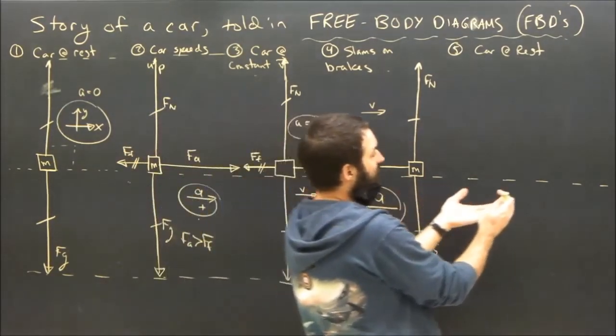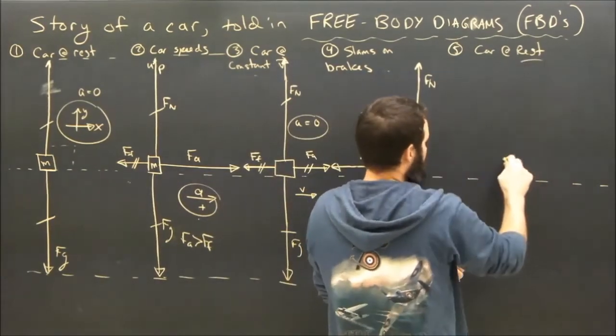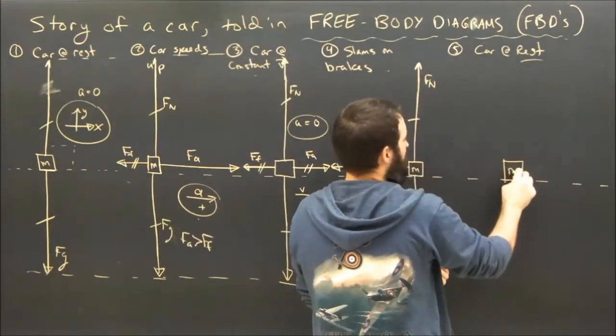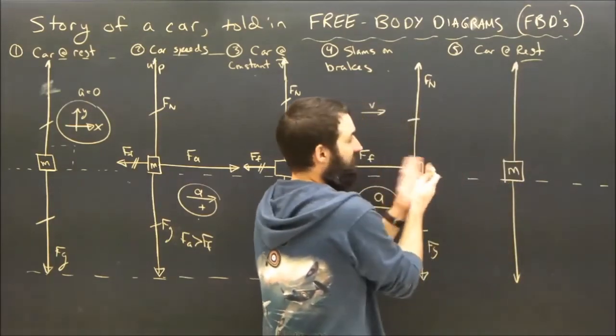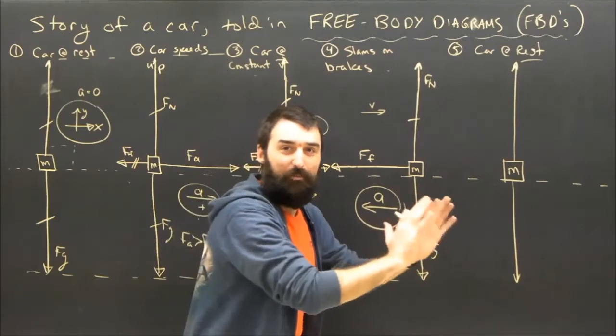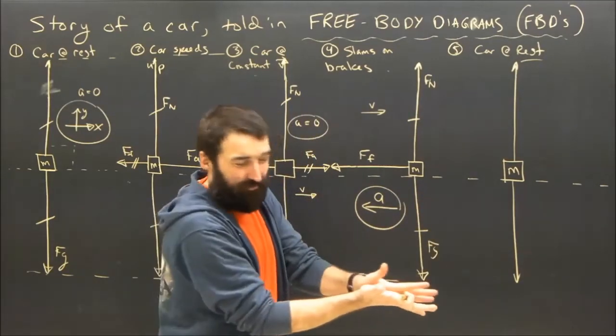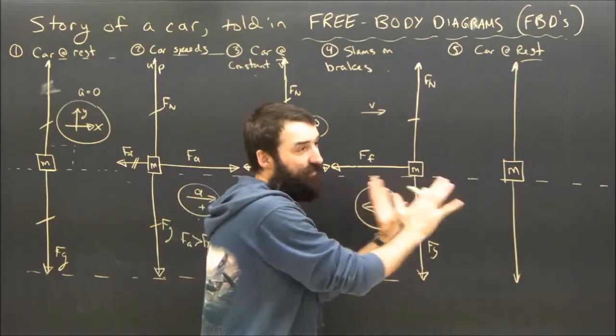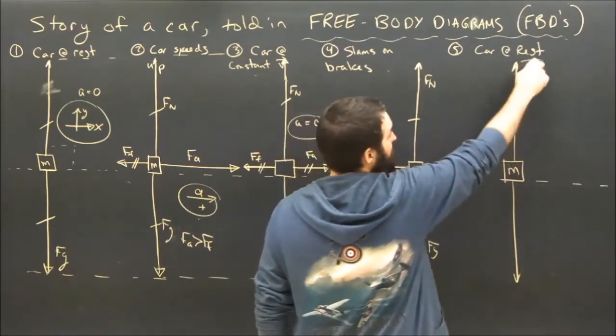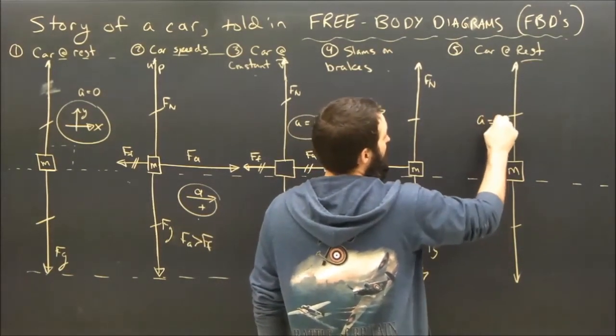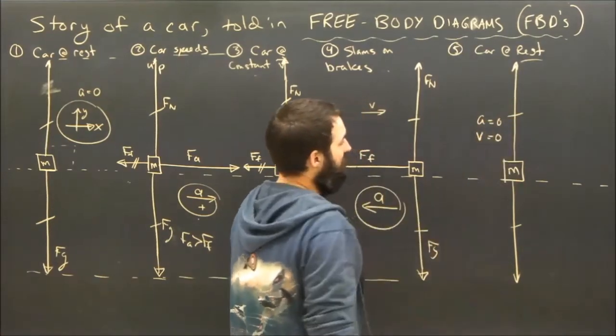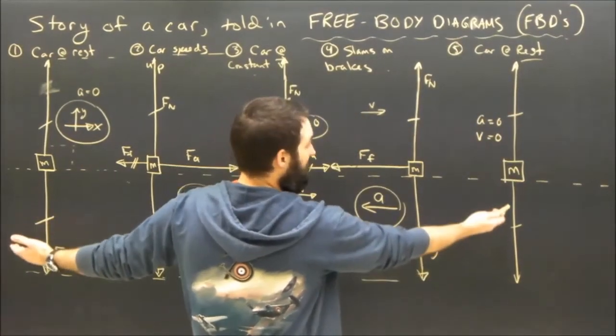And as it slows down, eventually it comes to a stop. And as soon as it comes to a stop, friction disappears. Because friction is trying to oppose the motion, it's trying to oppose slippage. It's trying to fight the motion of the car. And as soon as the car comes to a stop, friction is not needed. So A will be zero, and V is zero. And the car is at rest, just like it was before.